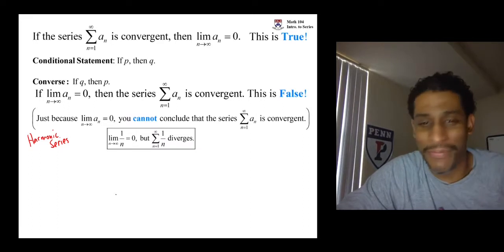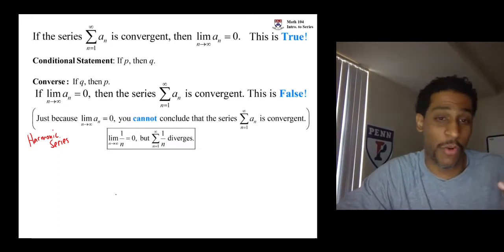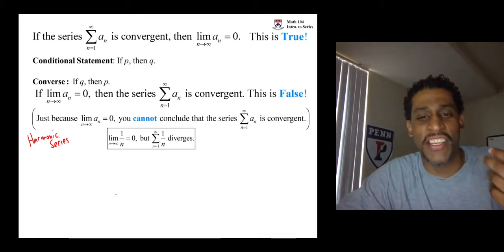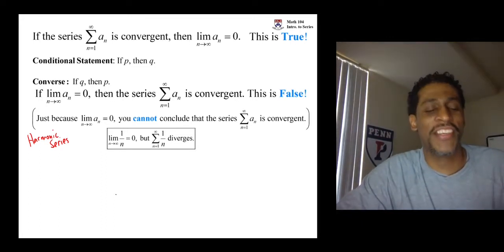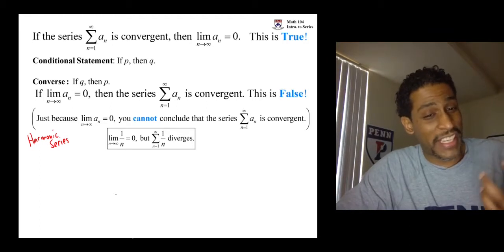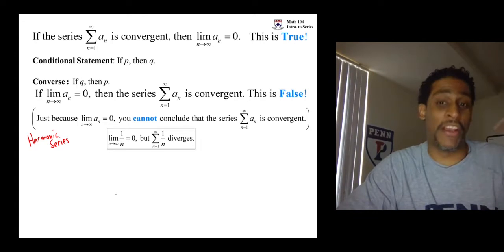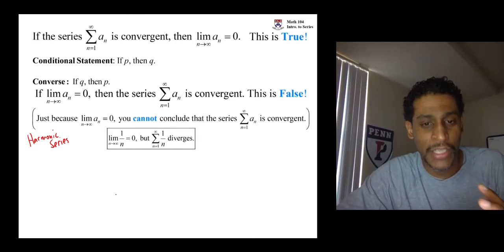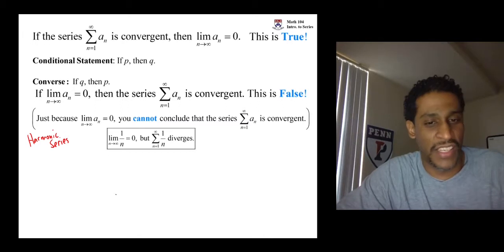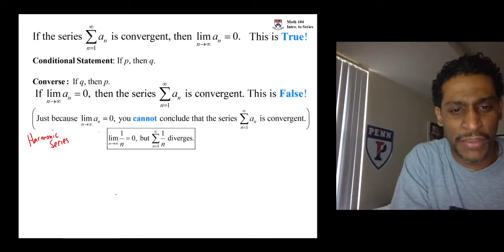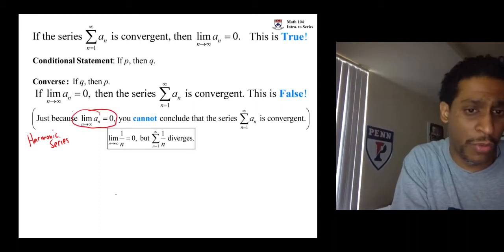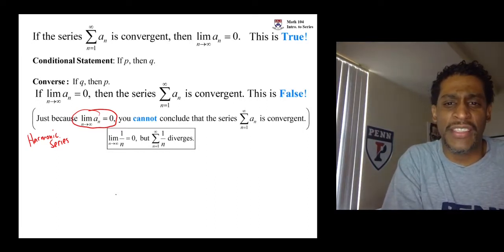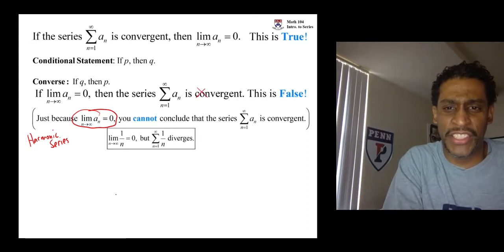To show why the harmonic series is divergent, we're going to need to go through a bunch of tests. One of the tests in the very next section is the integral test, and to officially show the harmonic series diverges, we'll need that. We could also use the comparison test. The limit as n goes to infinity on one over n is zero, so the limit is zero — but the series is not convergent, it's divergent.